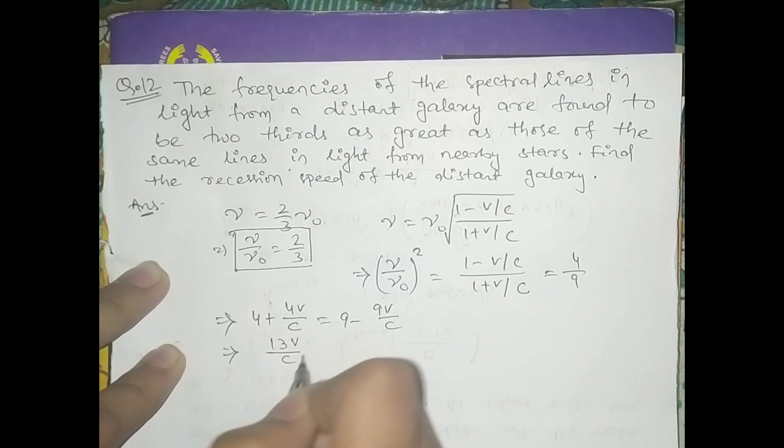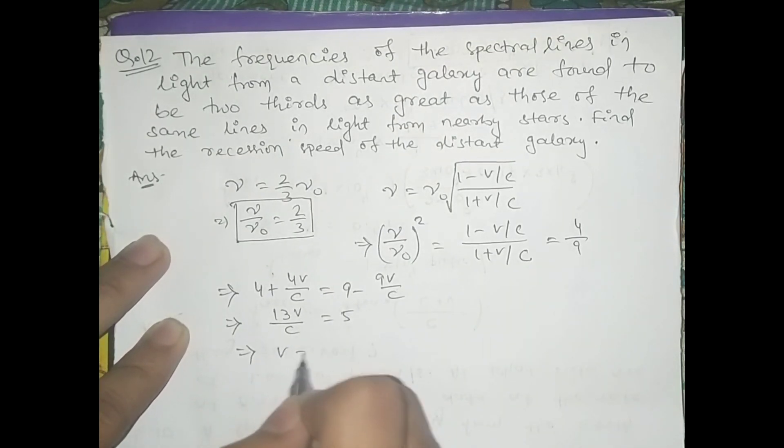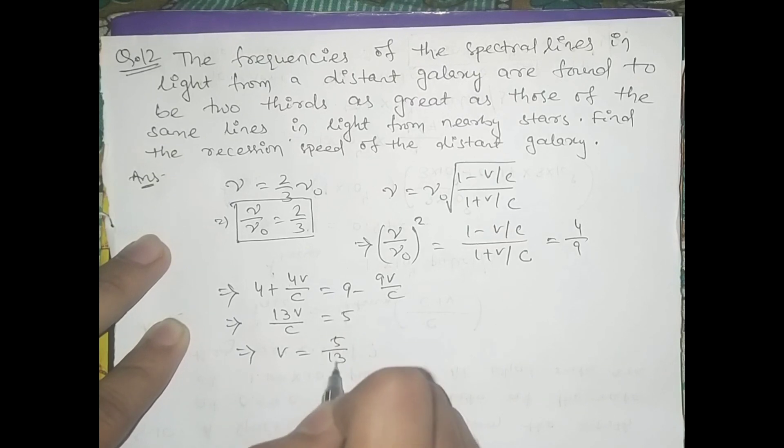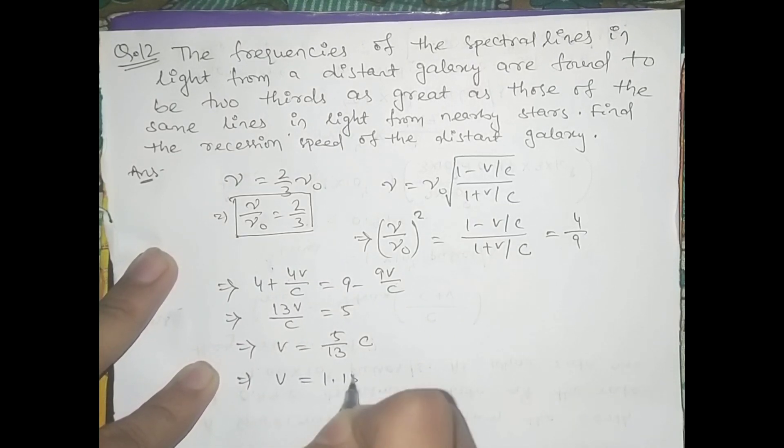That equals 13v/c equals 5, and v equals 5/13 times c. Putting this value, we get v equals 1.15 times 10 to the power 8 meters per second.